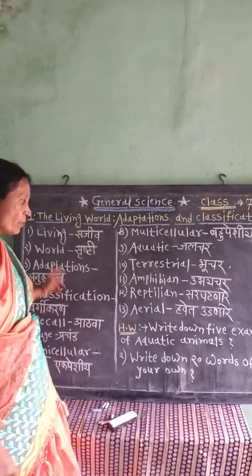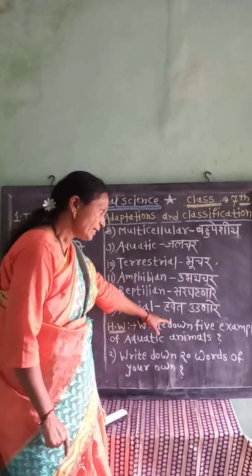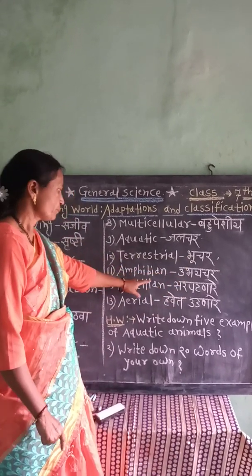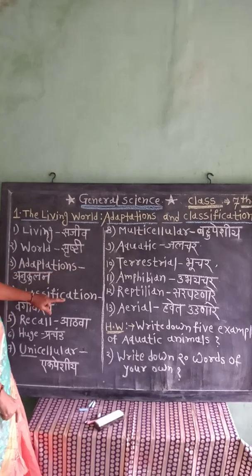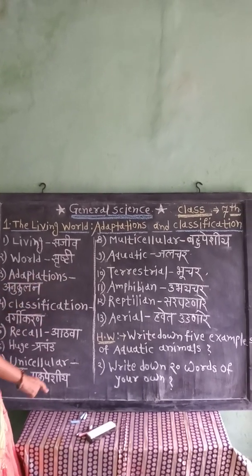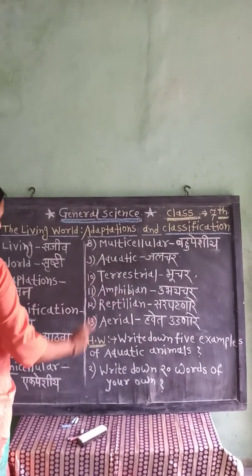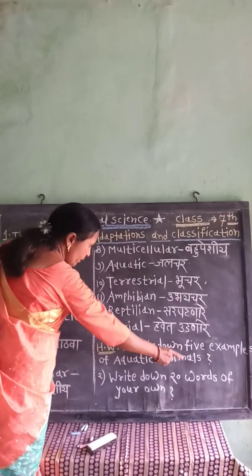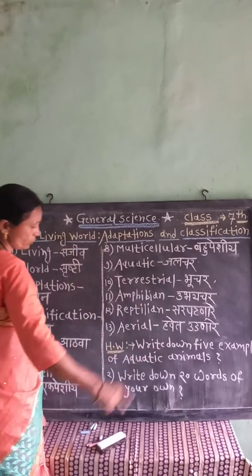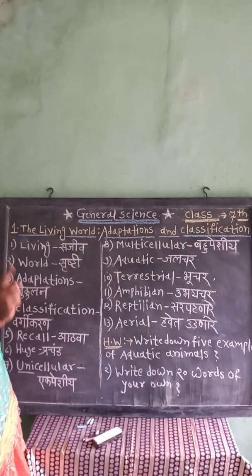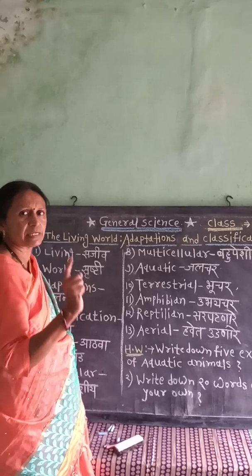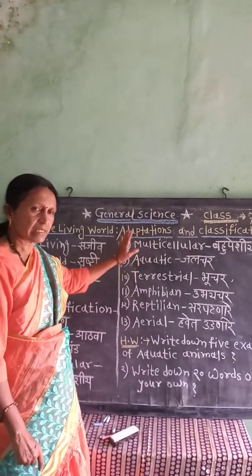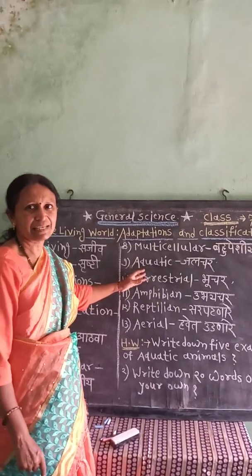Now write down your homework. First, write down five examples of aquatic animals. Second, write down 20 words of your own choice. Do you understand? Have a nice day.